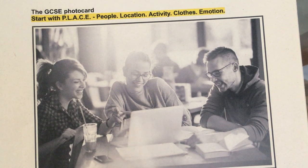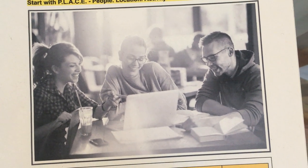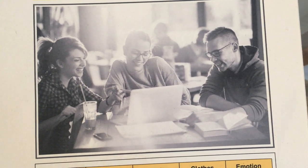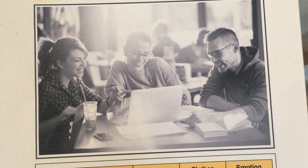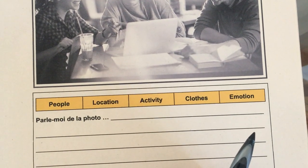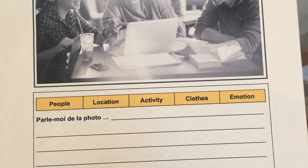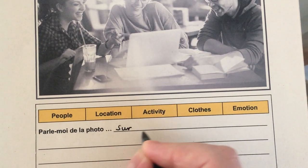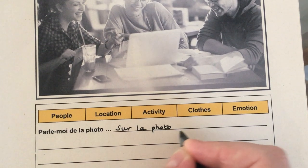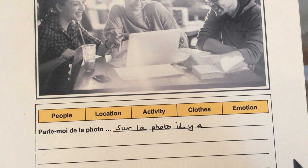PLACE gives you an idea of where to begin and I think starting with People is the obvious one. So I'm going to describe who is on this photo. I can see that I've got two women and a man. So in answer to the question 'Parle-moi de la photo' — tell me about the photo — I'm going to start by describing who is on the photo. 'Sur la photo, il y a' is probably the best way to start the description of almost all these photo cards — 'on the photo there is/are'.